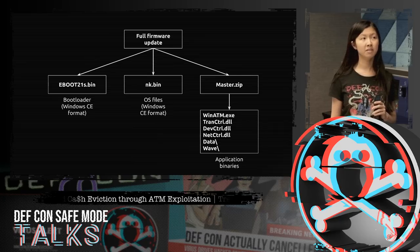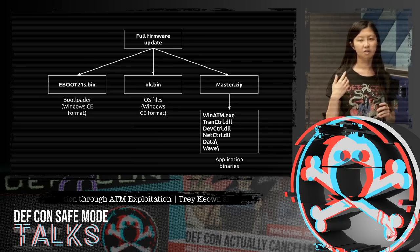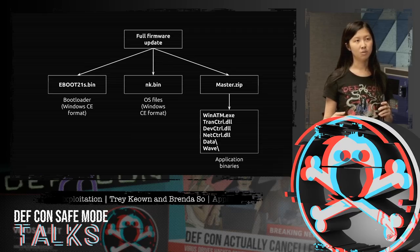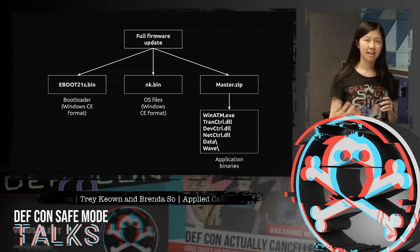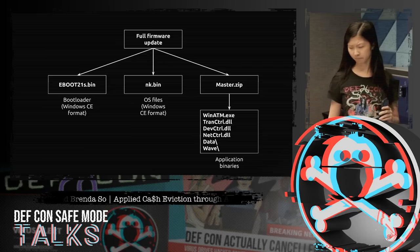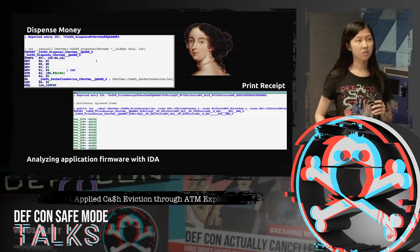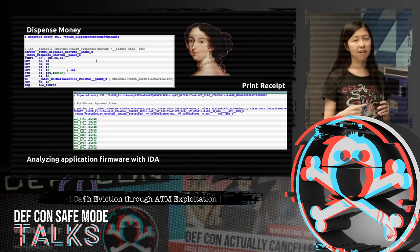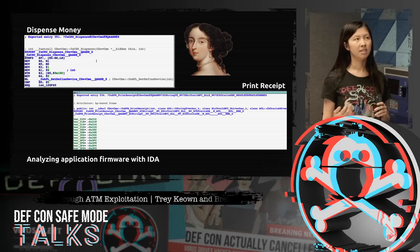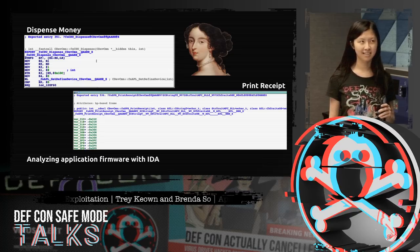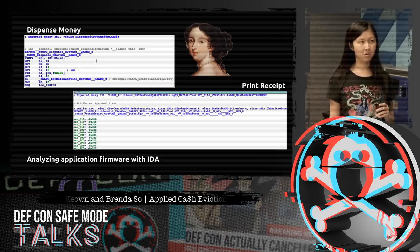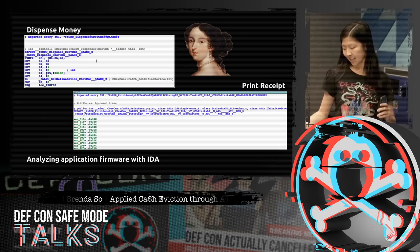The application binary still has exported entry names, so from a reverse engineer's perspective it's easy to figure out what each function does. For instance, to find the dispense money functionality you just find the function called 'dispense,' or to find the receipt printer you find the function called 'print receipt.' With this firmware update, we tried our first modification — just changing the 'please wait while loading' screen to 'please wait while pwning.' But changing that one character caused it to get stuck on the boot screen.